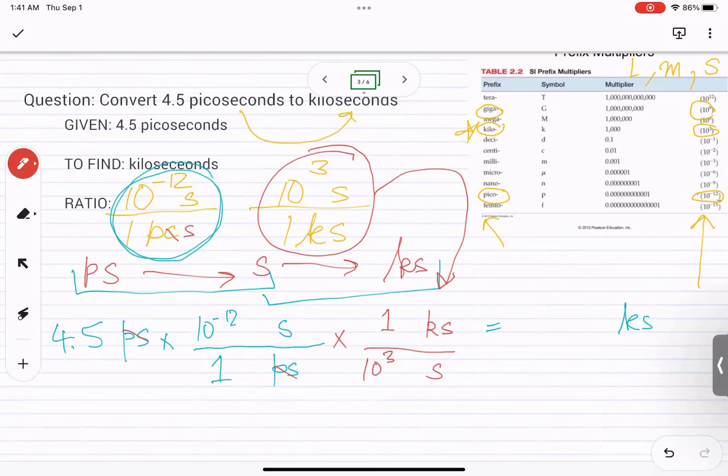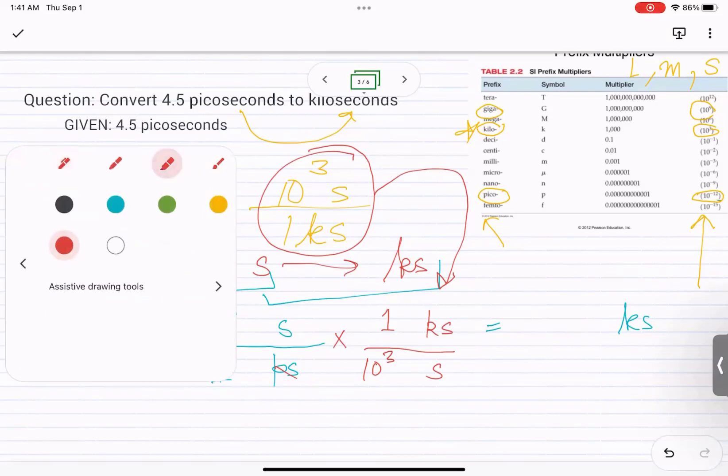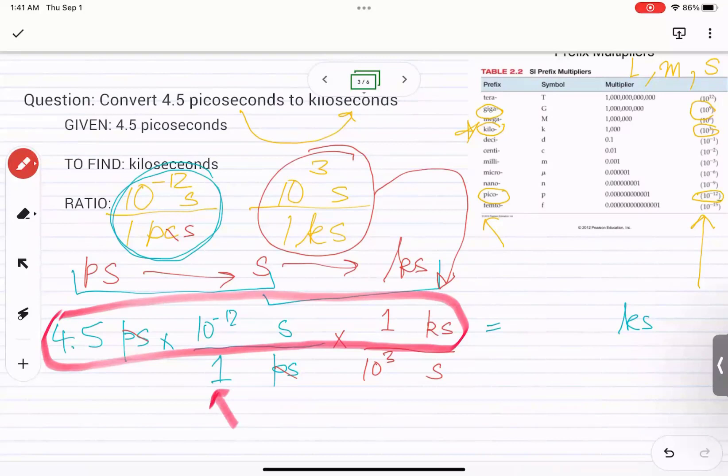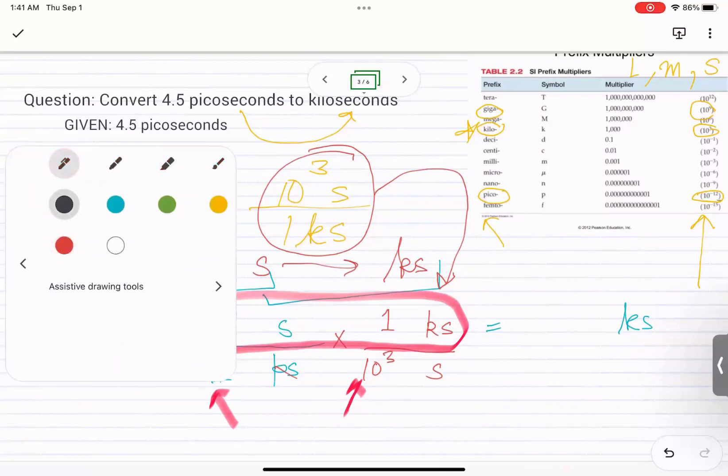So go ahead and solve this. What I mean is everything on the top multiplied together. So multiply 4.5 with 10 raised to negative 12 times 1. And then divide all of it by 1 times 10 raised to positive 3. So both of this should be on the bottom. And see if you're getting this as the answer.